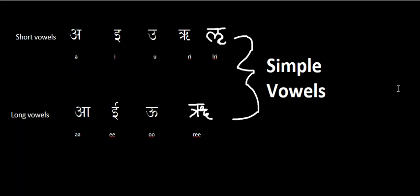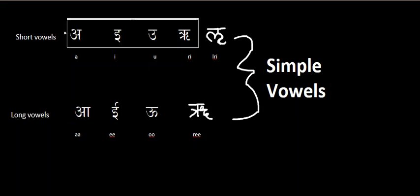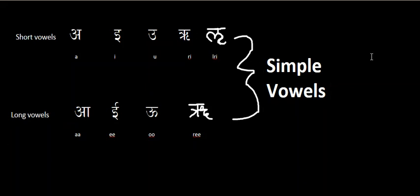So those are the simple vowels. The order I just pronounced them — a, a, i, i, u, u, ri — that was the order that I learned them in. It was easier for me to learn them in that order because of the association between the short vowels and the long vowels.